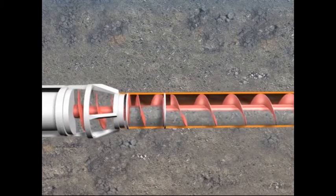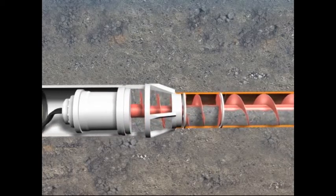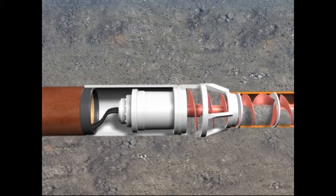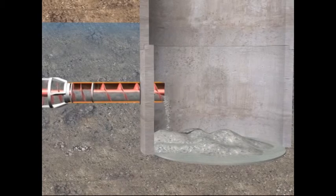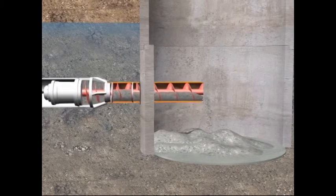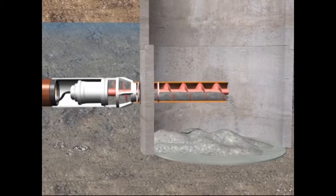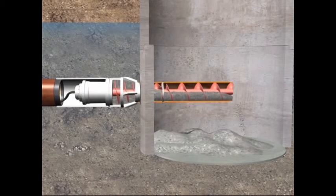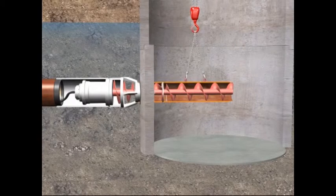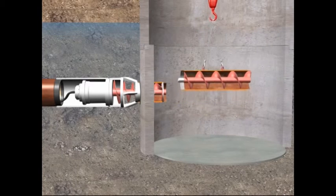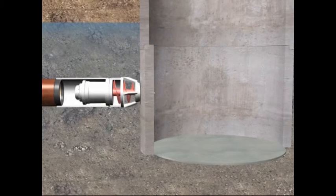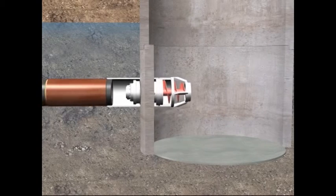The ground is excavated with a special cutting head and transported through the steel casing to the reception shaft by the anti-clockwise rotation of the augers. The excavated spoil is removed from the reception shaft. When the reamer reaches the reception shaft, the sewer is complete.